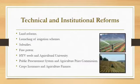Technical and institutional reforms. First, land reform — this was the main focus of India's first five-year plan, covering abolition of the zamindari system and consolidation of land holdings. Land reform refers to efforts to reform the ownership and regulation of land, redistributing land from landholders to landless people. Next, launching of irrigation schemes. Next, subsidies — cutting down the price of seeds, fertilizers, pesticides, and insecticides to ensure that farmers continue to improve agriculture.